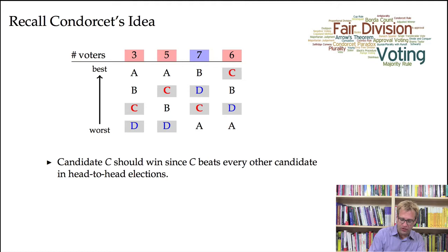And finally, against D, C beats D 14 to 7. So 14 people rank C above D, but only 7 people rank D above C. So C should be declared the winner.